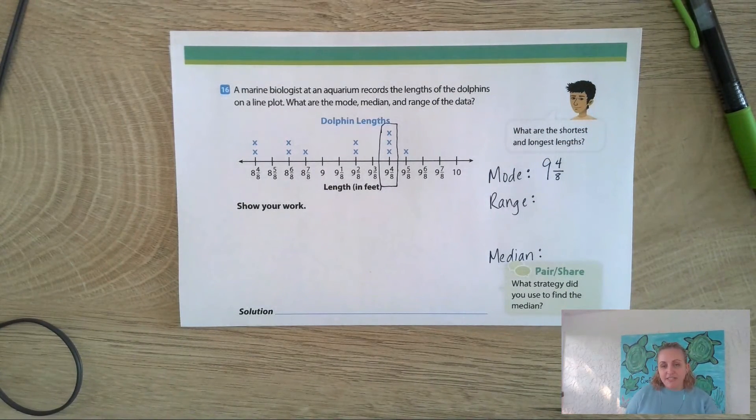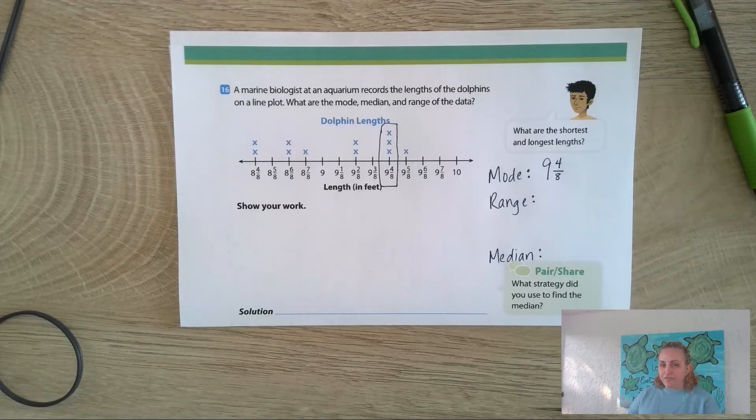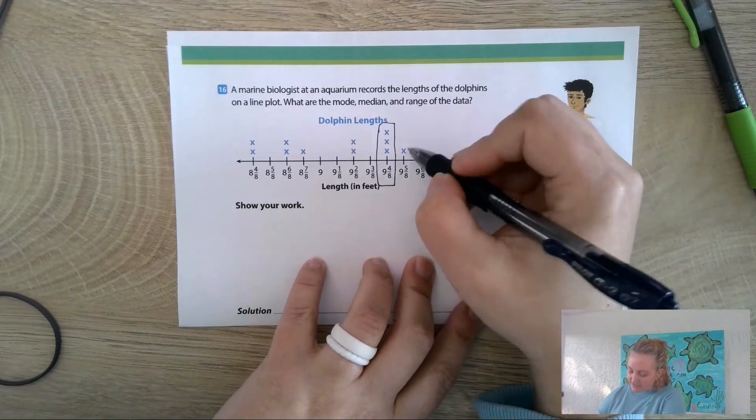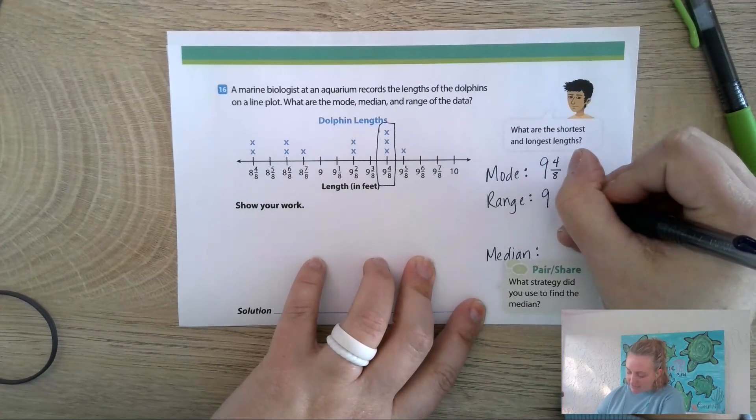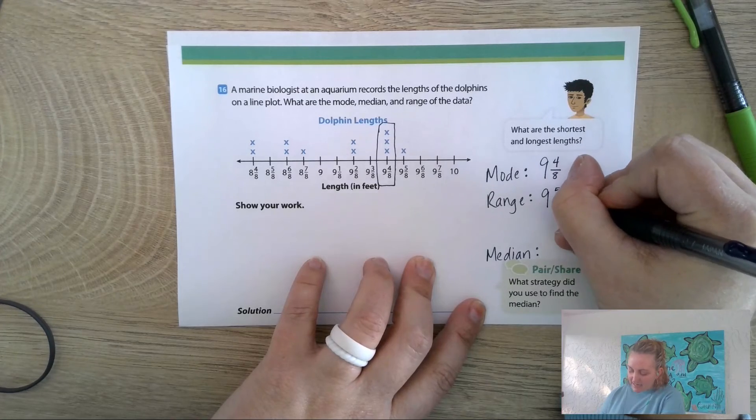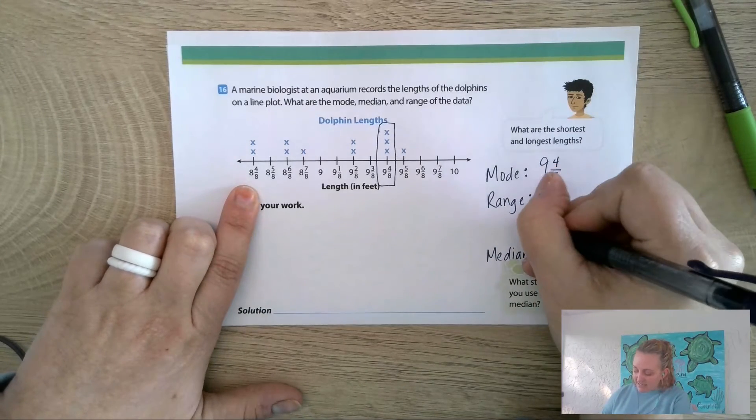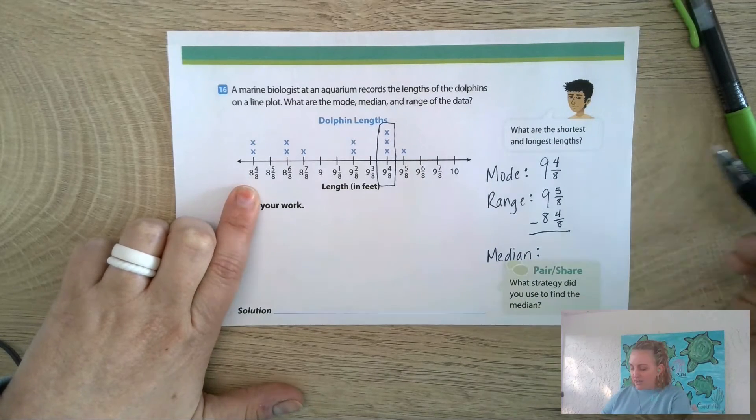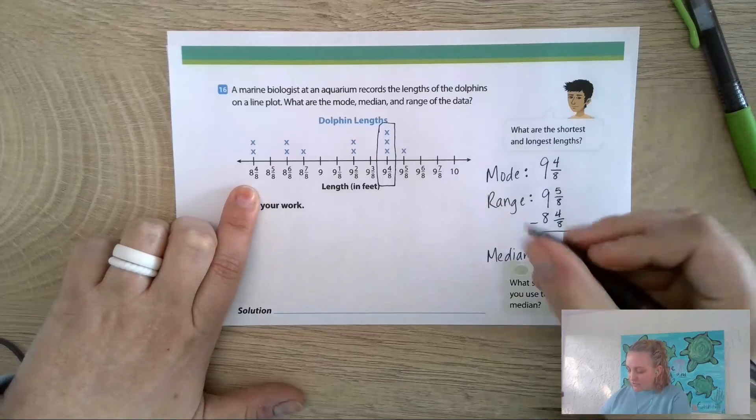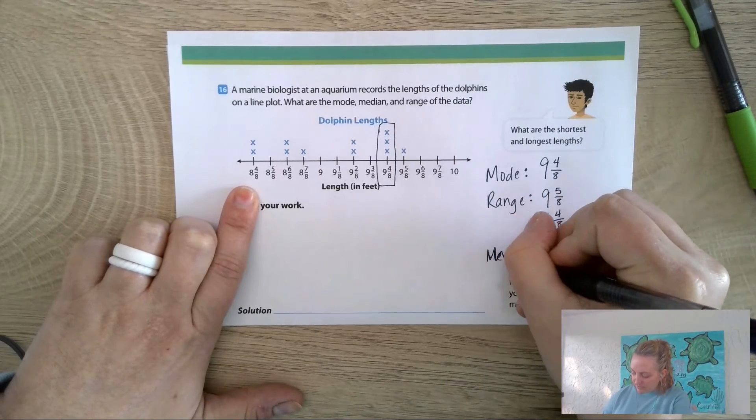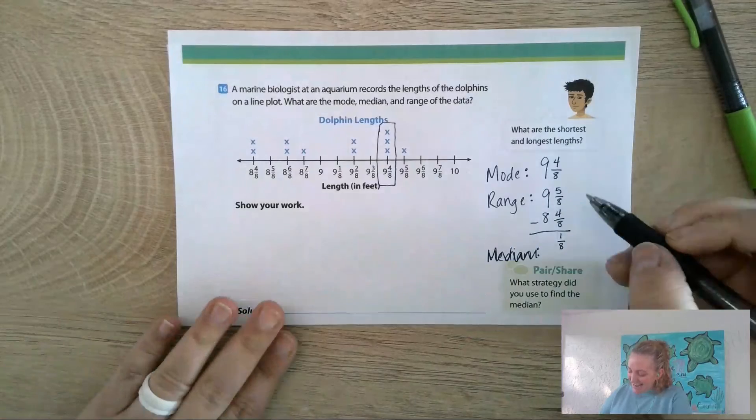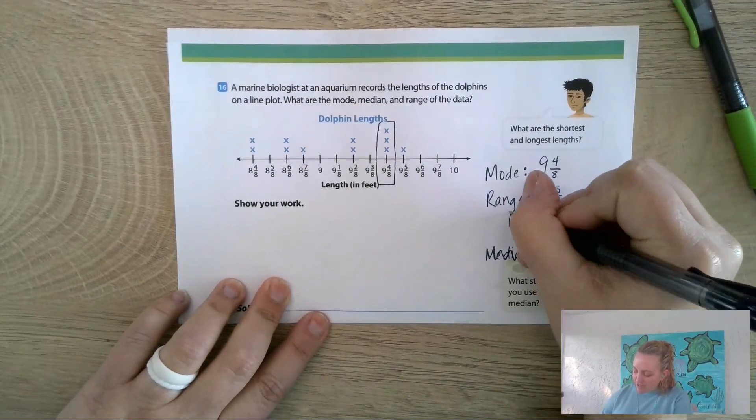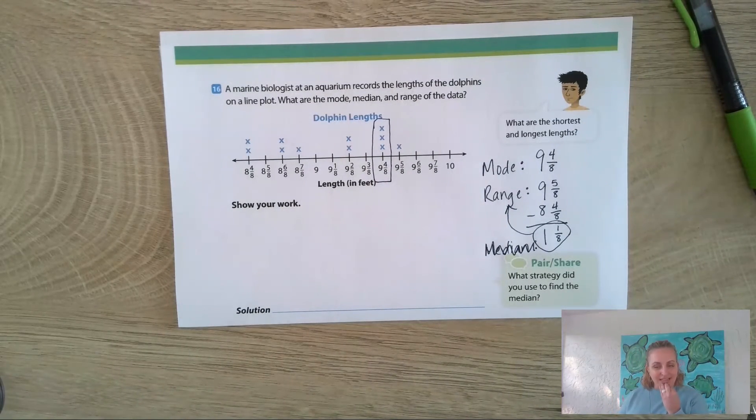The range is the difference between the biggest dolphin size and the smallest dolphin size. The biggest dolphin is this X over the biggest number, 9 and 5/8, and the smallest is 8 and 4/8. So I'm going to subtract to figure that out. 5/8 minus 4/8 is 1/8, and 9 minus 8 is 1. So the range is 1 and 1/8.